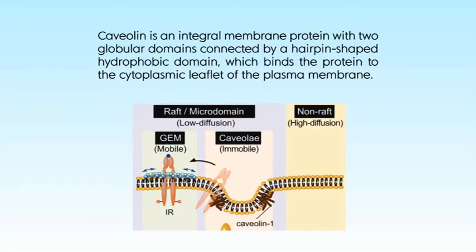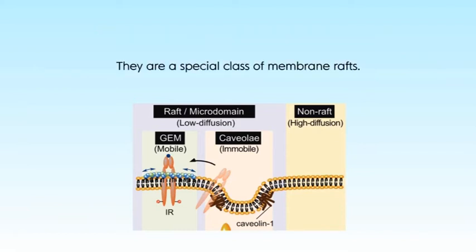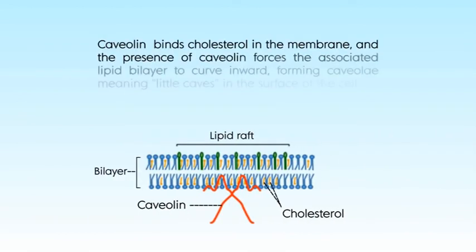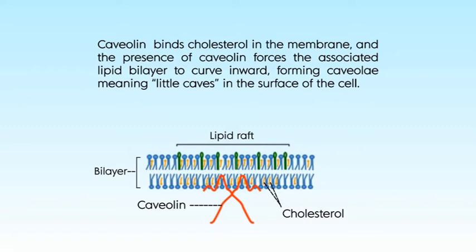Caveolin is an integral membrane protein with two globular domains connected by a hairpin-shaped hydrophobic domain, which binds the protein to the cytoplasmic leaflet of the plasma membrane. They are a special class of membrane rafts. Caveolin binds cholesterol in the membrane and the presence of caveolin forces the associated lipid bilayer to curve inward, forming caveolae — meaning little caves — in the surface of the cell. So caveolae are unusual rafts; they involve both leaflets of the bilayer: the cytoplasmic leaflet from which the caveolin globular domains project, and the exoplasmic leaflet, a typical sphingolipid-cholesterol raft with associated GPI-anchored proteins.